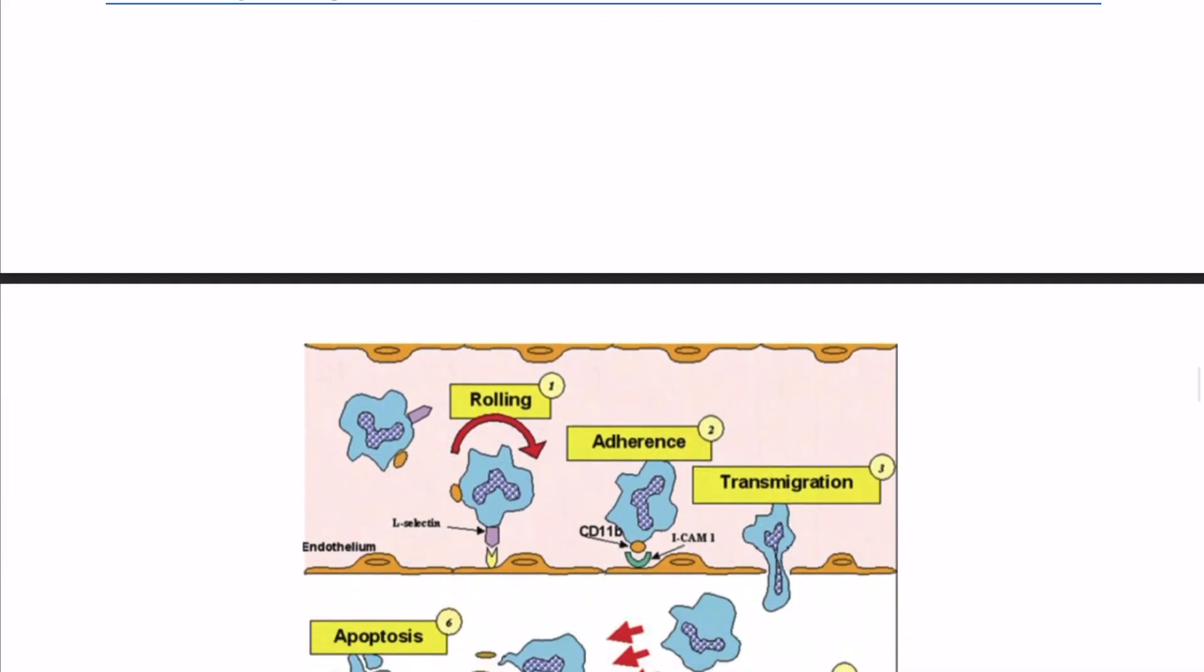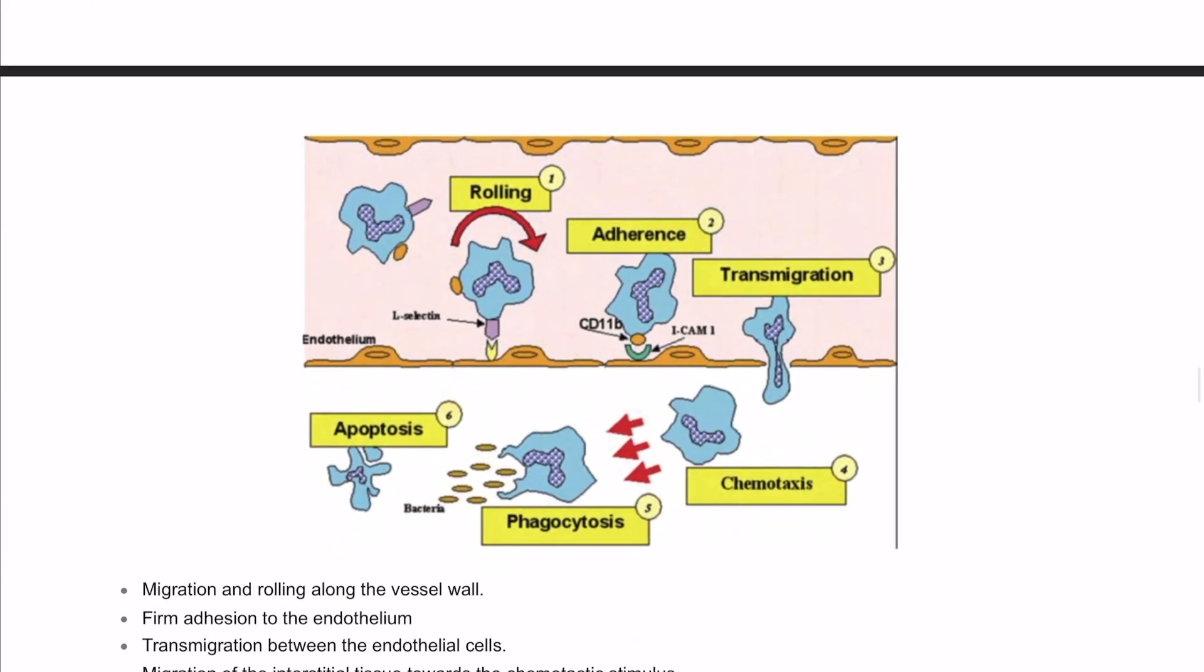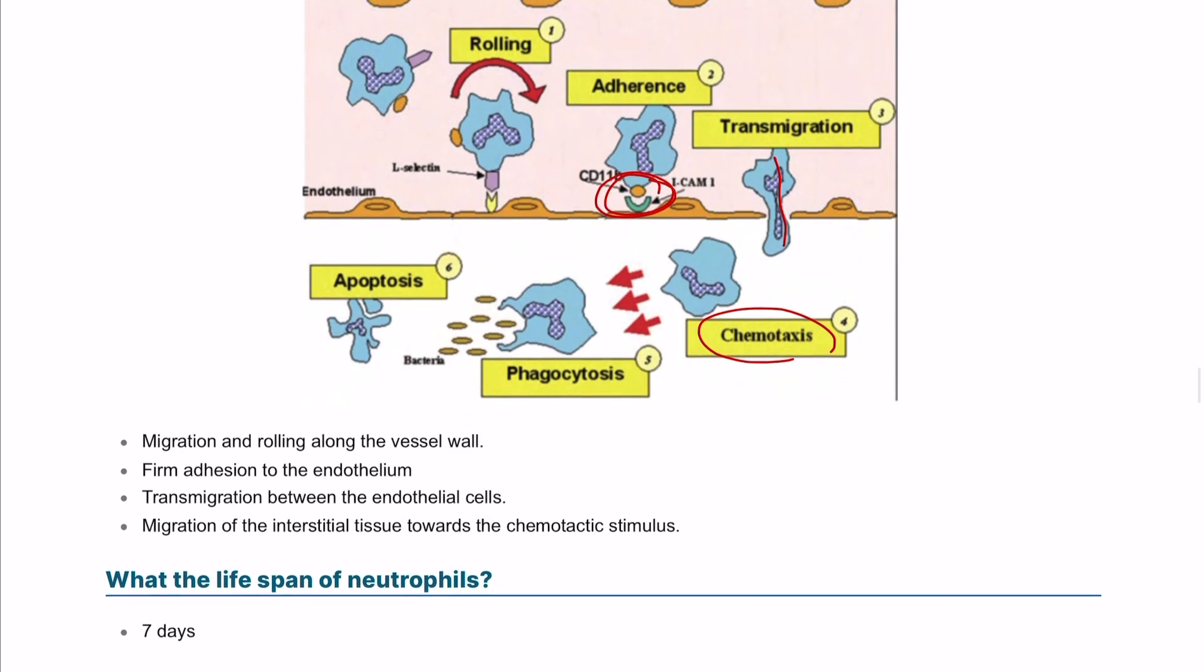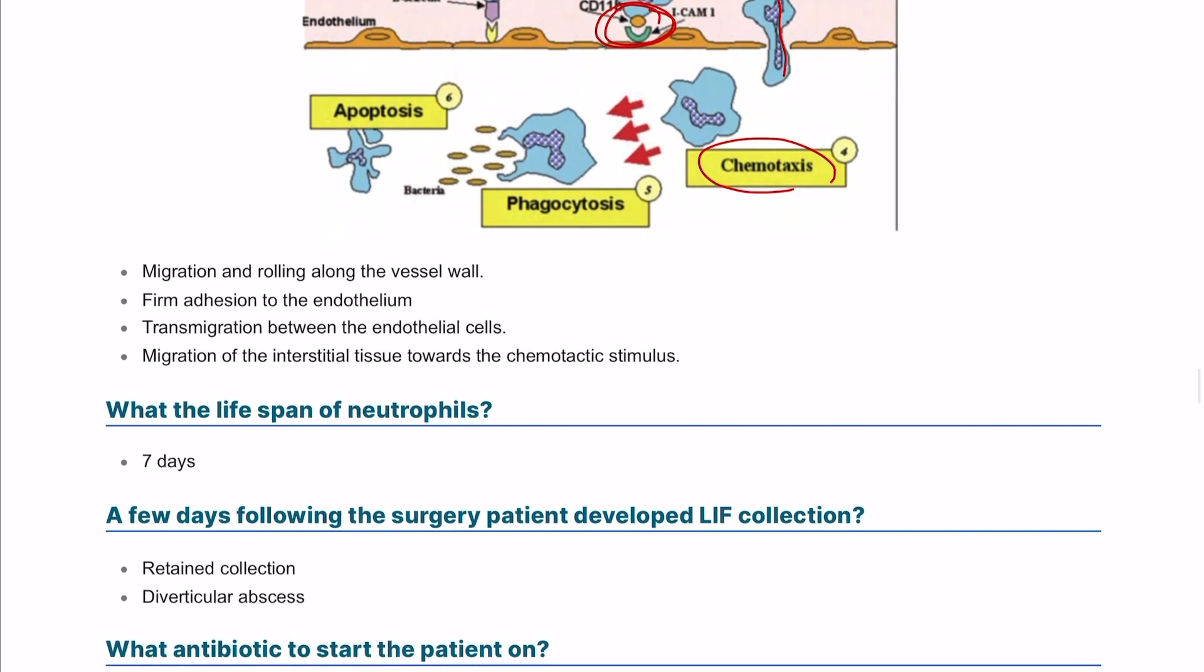This question was asked before, and it's how the neutrophils migrate through the wall in acute inflammation. So there is sort of rolling on the endothelial surface, and then adhesion by production of the integrase enzyme, and then transmigration through the wall, and then chemotactic effect, and phagocytosis, and apoptosis, which is programmed cell death.